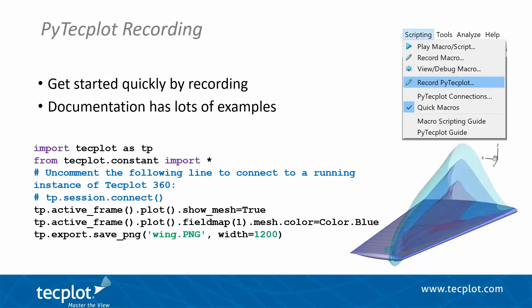The first new capability in PyTecplot is the ability to record directly from the Tecplot 360 user interface. Those familiar with the Tecplot 360 macro language will find it works very similarly — you just go to the scripting menu and say 'Record PyTecplot.' We felt this was a very important capability because getting started with a new API can be challenging, and recording gives you a quick start into understanding the API.